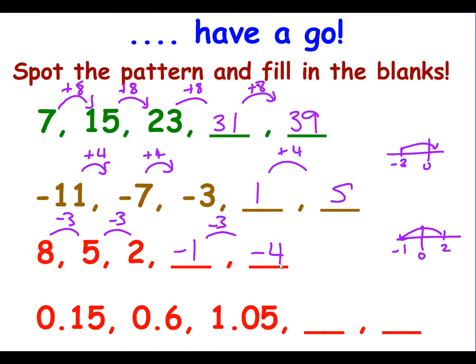And finally, some decimals. So I'm at 0.165 and I go to 0.6. So I've added 0.45 to the number. 0.6, just to check, is adding 0.45. So to continue the sequence, I add 0.45 and I end up with 1.05. I add 0.45 and I end up with 1.5. I add 0.45 and I end up with 1.95. So the two missing numbers are 1.5 and 1.95.